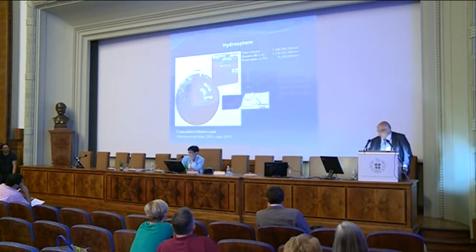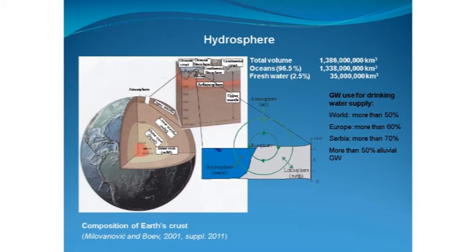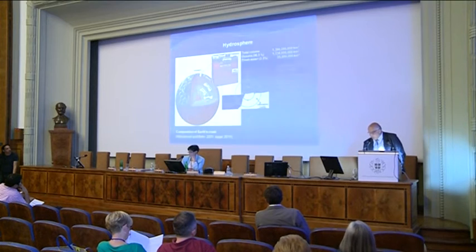The average density of the Earth is about five grams per cubic centimeter. Water is on the surface with about one gram per cubic centimeter, and the last 10 kilometers there is water in it. Alluvial aquifers may be a few hundred meters or even less. Groundwater is used as drinking water more than 50% in the world, more than 60% in Europe, 70% in Serbia, and out of that, half is alluvial aquifer groundwater — so it's important.